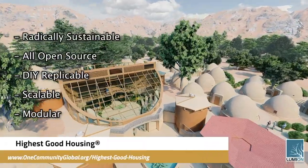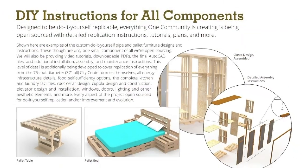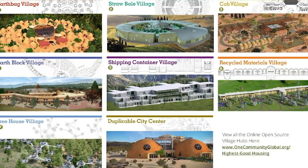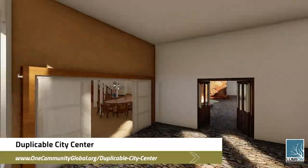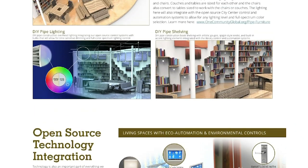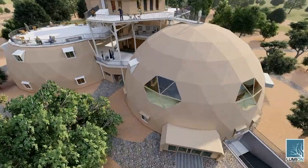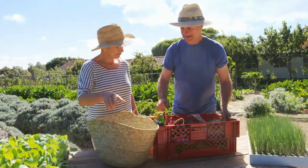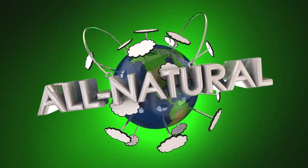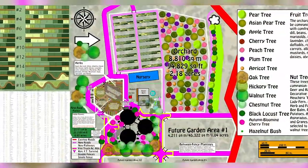The One Community approach to highest good housing is eco-artistic home building that is affordable, sustainable, do-it-yourself duplicable, resource and space efficient, and consists of seven different sustainably constructed village models. One Community is also creating an open source duplicable city center designed to be LEED Platinum certified, provide 12 guest rooms, dining for over 150 people, and laundry and recreation space for over 300 people, all while saving money, time, space, and resources. One Community's approach to highest good food is duplicable almost anywhere, scalable for different needs, more biodiverse and nutritious, part of forwarding a global open source botanical garden collaborative, and includes nine different free shared and duplicable growing environments.